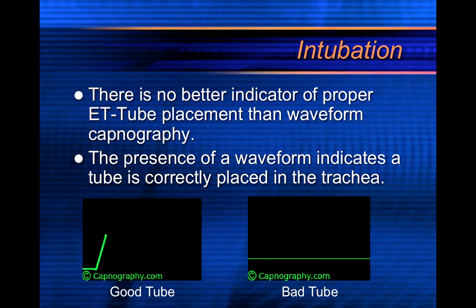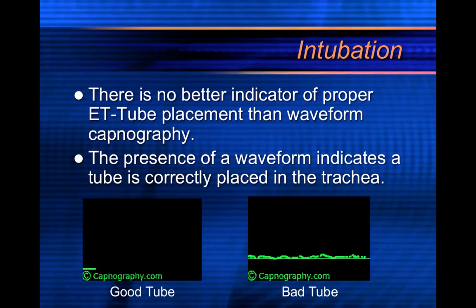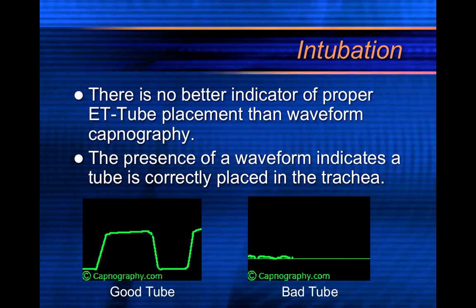There is no better indicator of proper ET tube placement than waveform capnography. The presence of a waveform indicates the tube is correctly placed — that is undoubtable. If you intubate somebody, put capnography on their tube, and get a value back with good plateaus, you have them correctly intubated in the trachea.